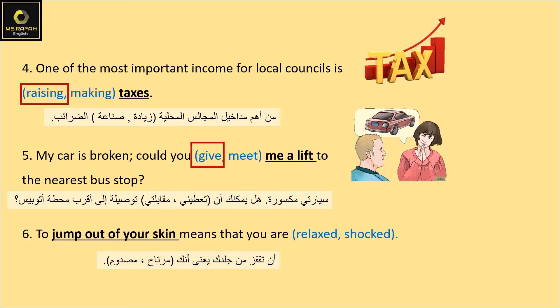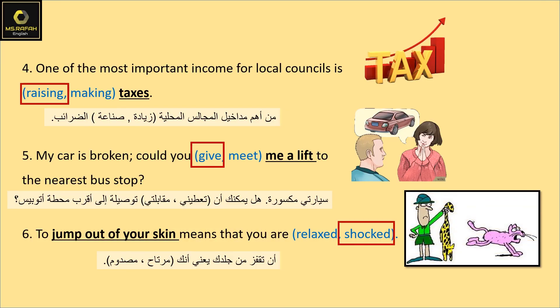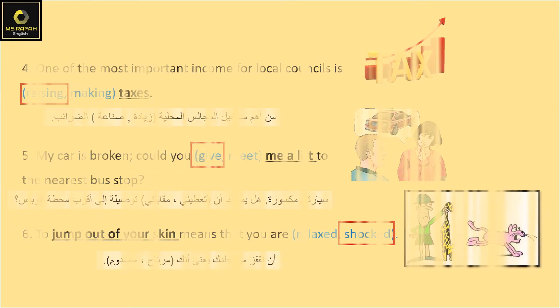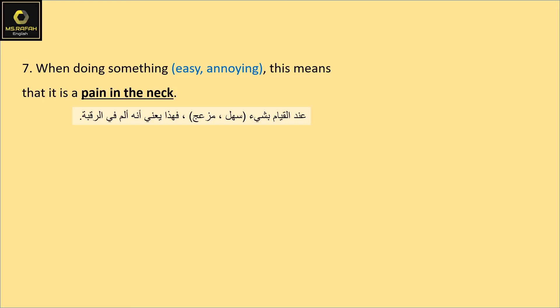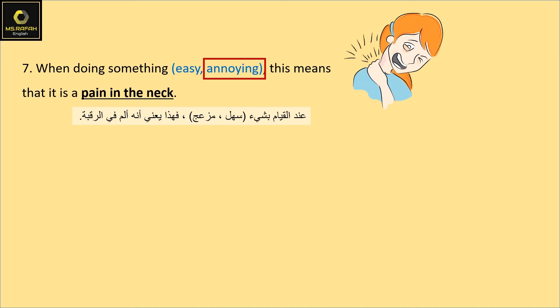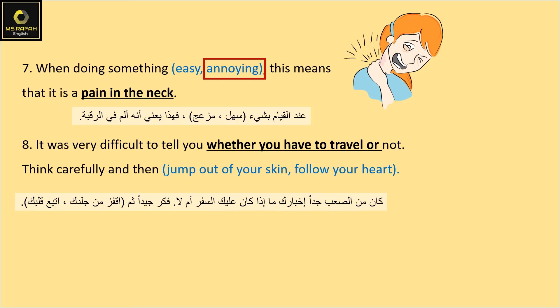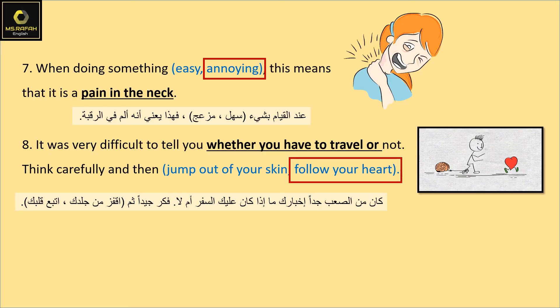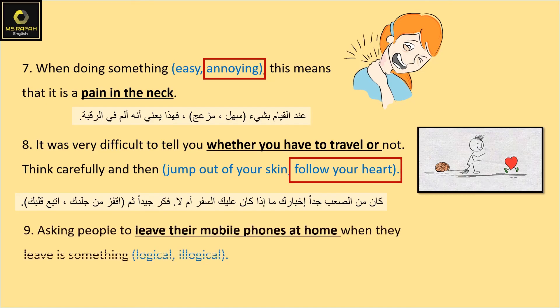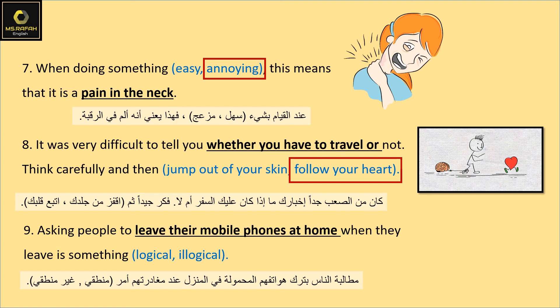To 'jump out of your skin' means that you are shocked. When doing something annoying, this means that it is 'a pain in the neck'. It was very difficult to tell whether you have to travel or not — think carefully and then follow your heart. Asking people to leave their mobile phones at home when they leave is something illogical.